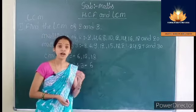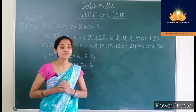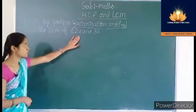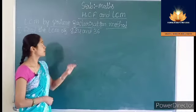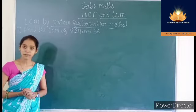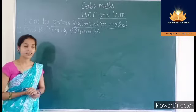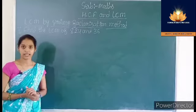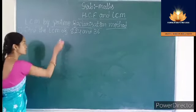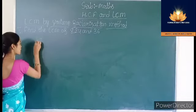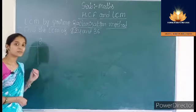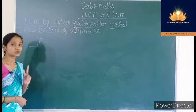Then let us learn how to find out the LCM by prime factorization method. Find the LCM of 8, 24, and 36 by prime factorization method. According to the prime factorization method, we have to divide the numbers individually and only by prime factors. Let us divide first 8. We have to take the smallest possible prime factor, that is 2.